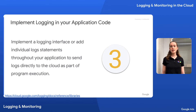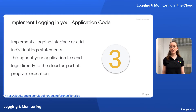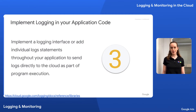Next, you can implement direct-to-cloud logging within your application code by implementing a logging interface or adding individual log statements throughout your codebase. For example, Google Cloud Logging offers client libraries for all of the languages supported by the Google Ads client libraries except for Perl. It also offers a REST API for other languages, including Perl, so you can incorporate cloud logging statements directly into your Google Ads API integration.